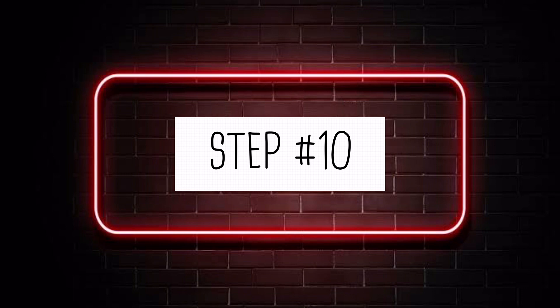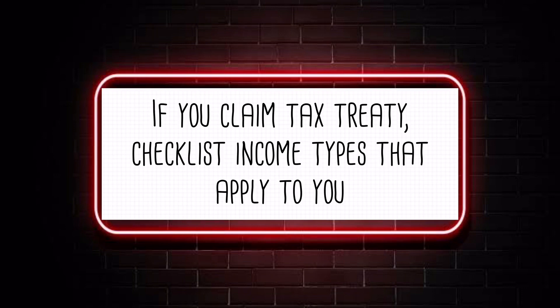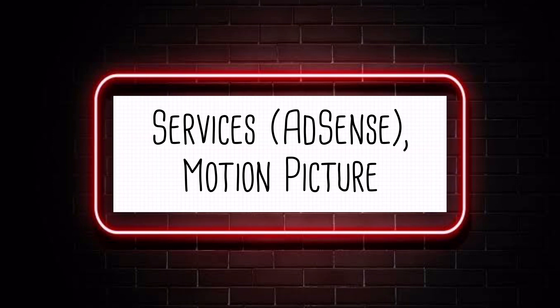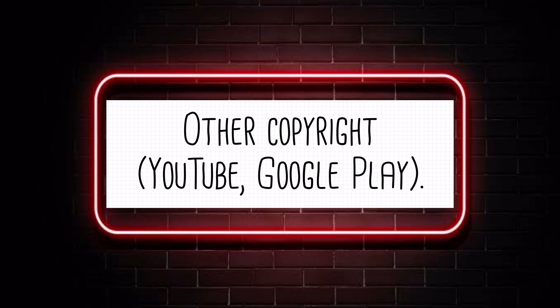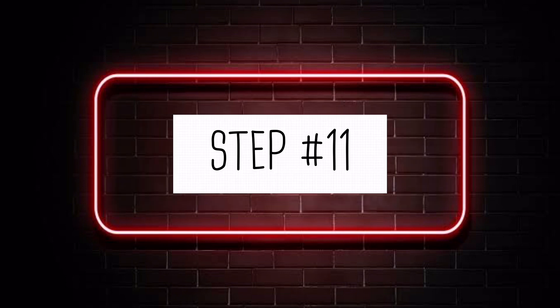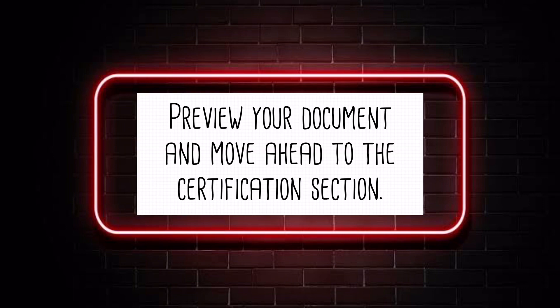Step 10. If you claim a tax treaty, check the list of income types that apply to you. Preview your document and move ahead to the Certification section.